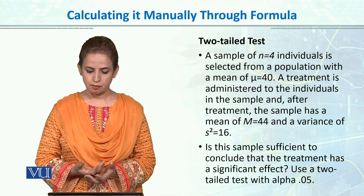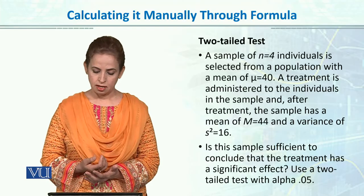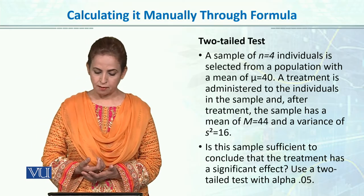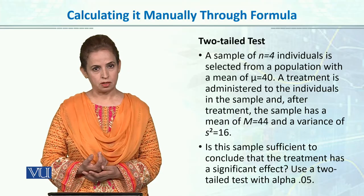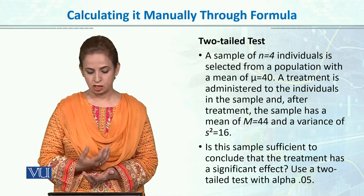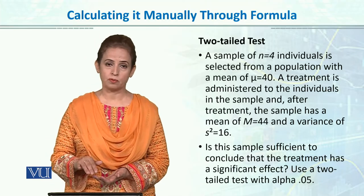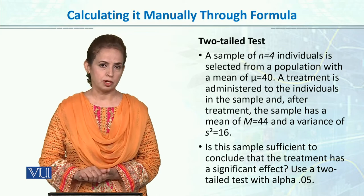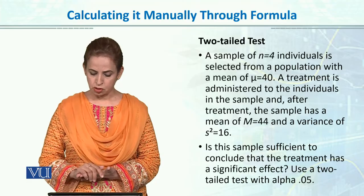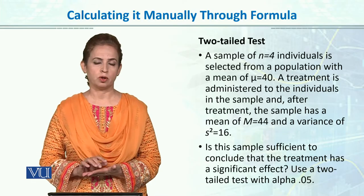So this is an example. A sample of n equals 4 individuals is selected from a population with a mean of 40. A treatment is administered to the individuals in the sample and after treatment, the sample has a mean of 44. So population mean is 40, and after treatment the mean is 44. The variance, i.e. S squared, is 16. We have the variance of the sample. Is this sufficient to conclude that the treatment has a significant effect? Use a two-tail test with alpha 0.05.